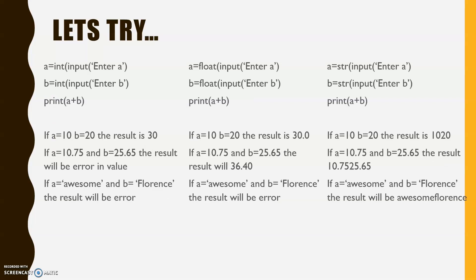Suppose we have written: a = int(input('Enter a')), b = int(input('Enter b')), print(a + b). If a is 10 and b is 10, the result will be 20, because both are integer values and integer plus integer gives a numeric result. If we give a = 10.75 and b = 25.65, it will create an error because the program expects integer input. Similarly, if we give string values like 'awesome' and 'florence', it will also generate an error because the input type is integer but we are giving string values.